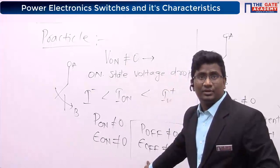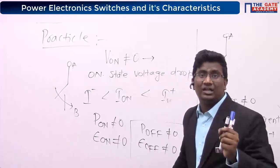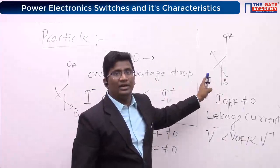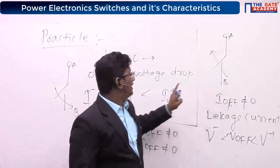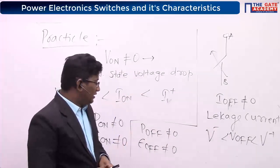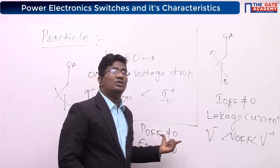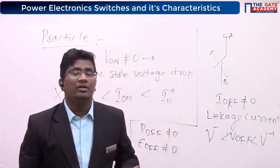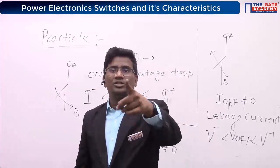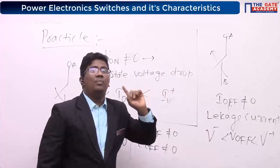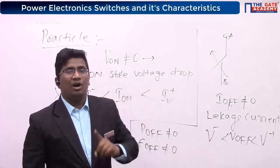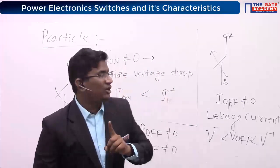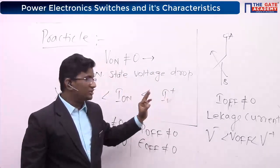For a practical switch — when it is on and when it is off — the on-state losses are called conduction losses, and the off-state blocking losses are called blocking losses.